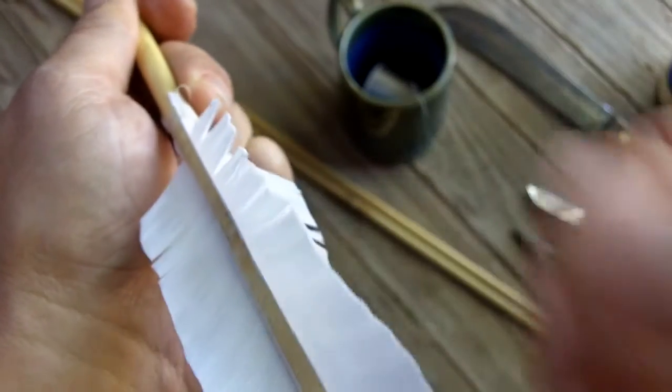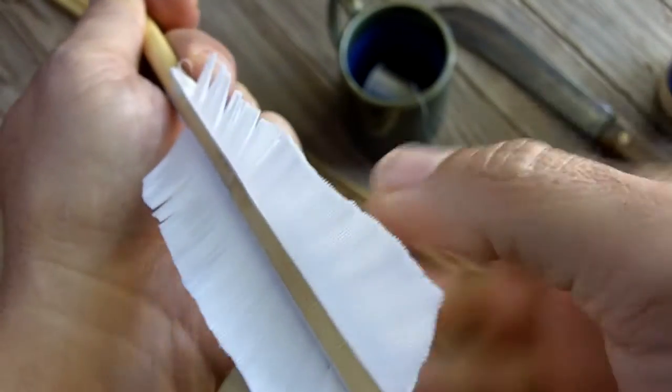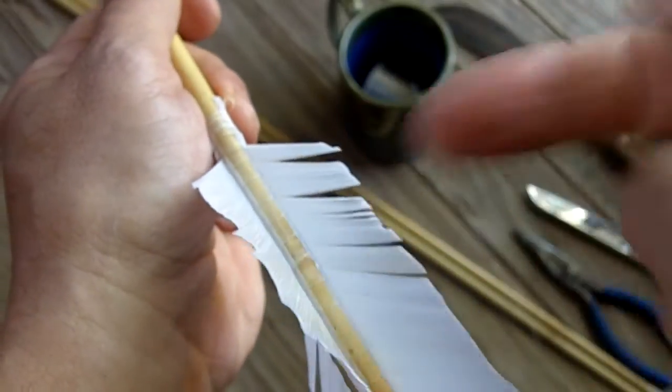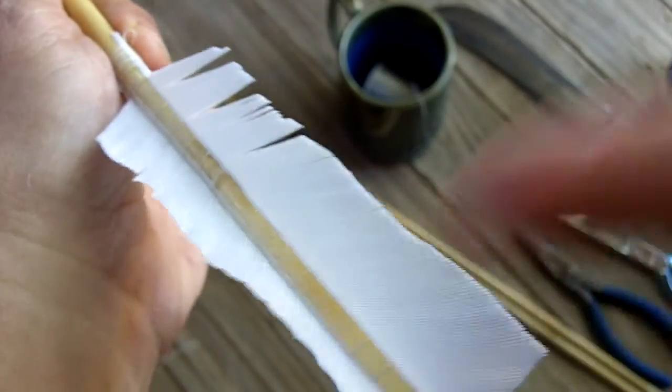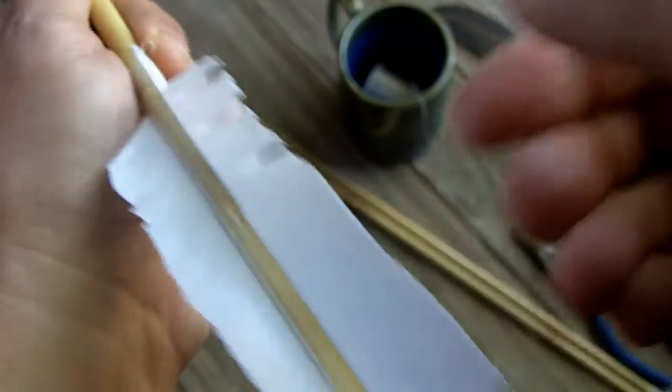With the spacing that close together, I don't have to pull very much on the fletching to get it straight and flat. The wrapping itself has flattened out the vein pretty good at the bottom.